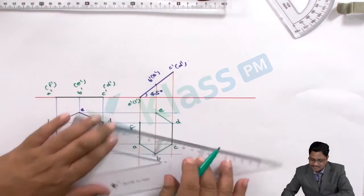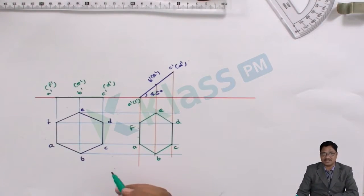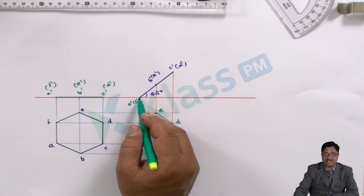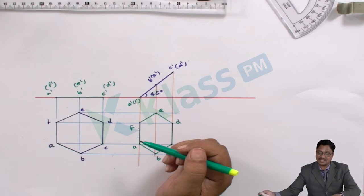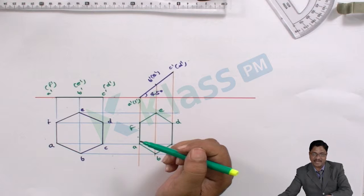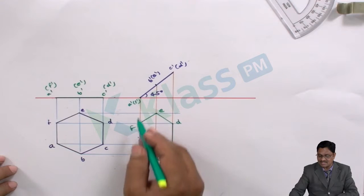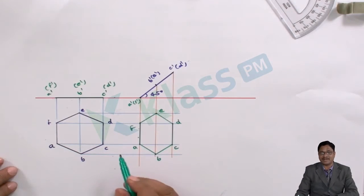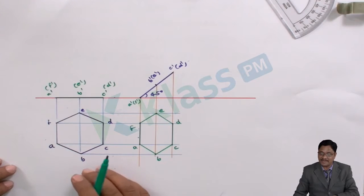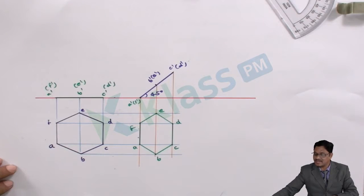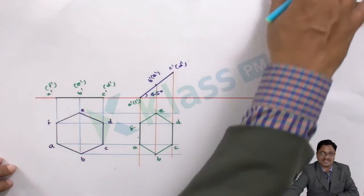Now one condition is satisfied: edge in HP and surface making 45 degrees. But the other condition — the edge on which the plane rests must be 30 degrees to the vertical plane. Currently the resting edge is perpendicular to the VP. We need it to be 30 degrees with the VP. So in the next stage, take the 30 degree reference line, and along it shift the view dimensionally as it is.